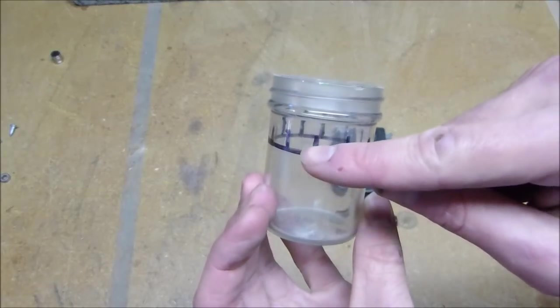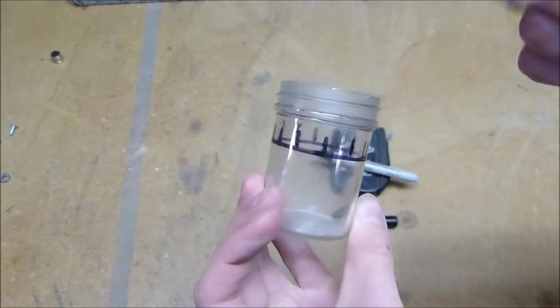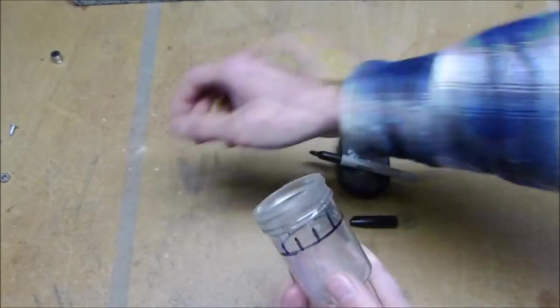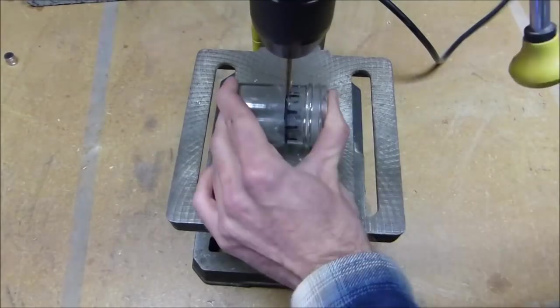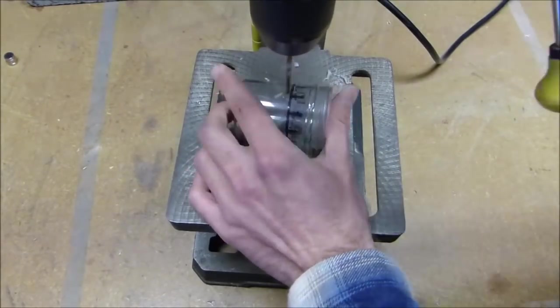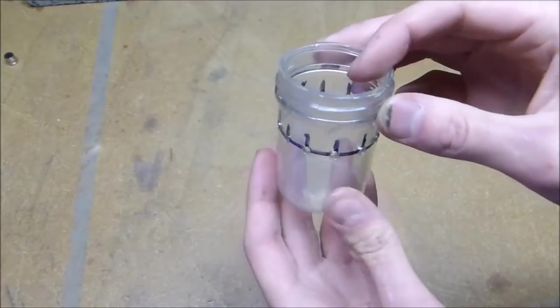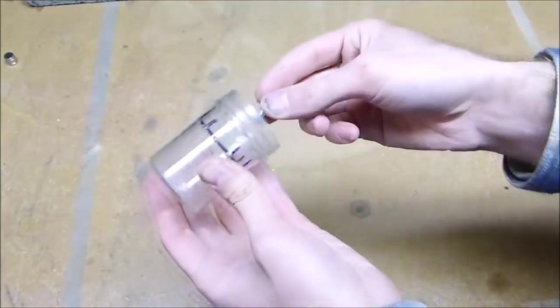So we need to drill a hole at each of those intersections, all the way around. And the hole needs to be a hole that these screws fit nicely into.